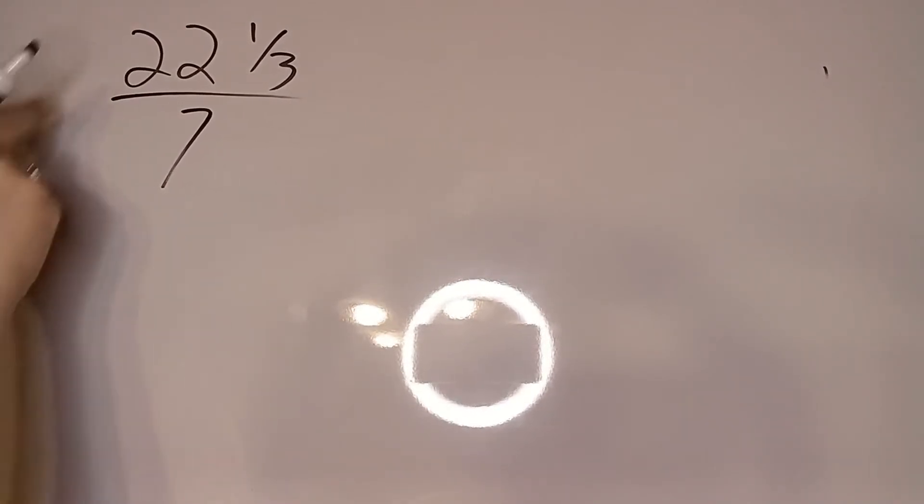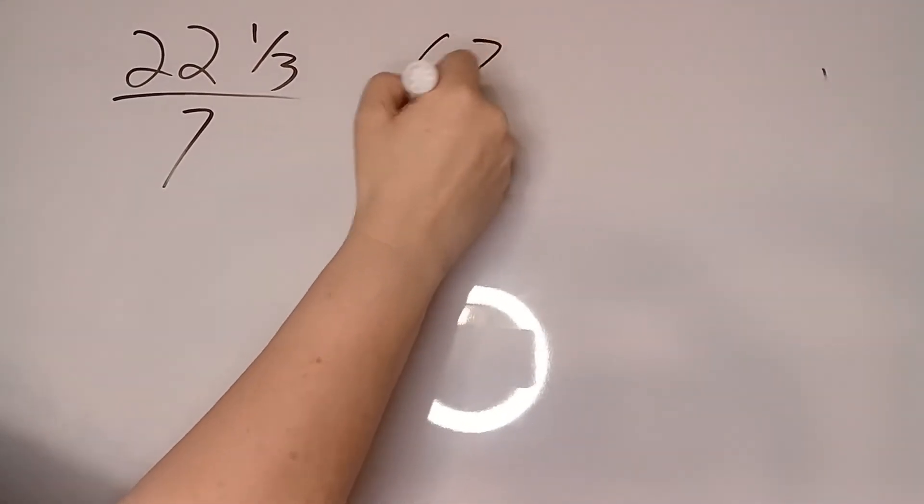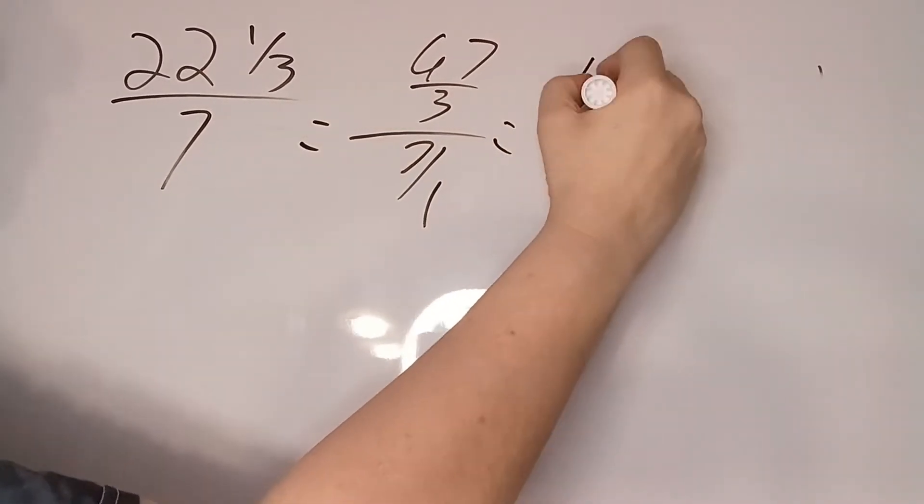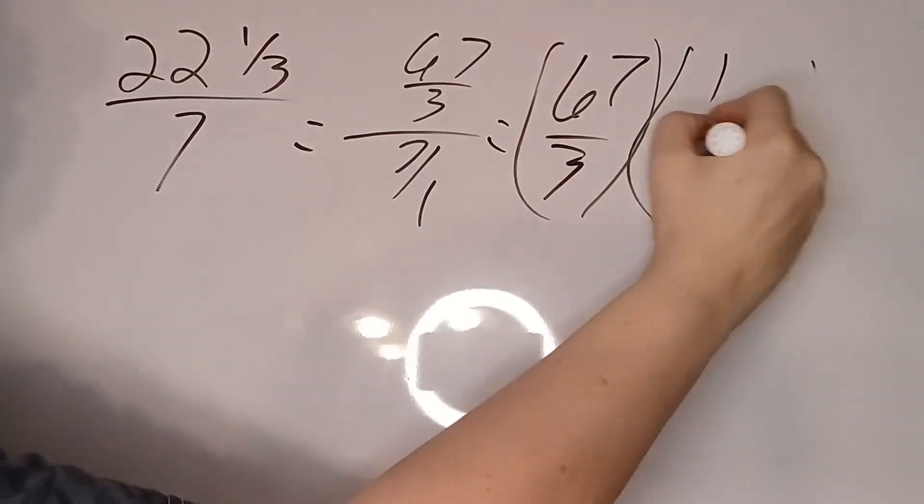All right, we're told to change this mixed number into an improper fraction. That's 66, 67 thirds divided by 7 over 1. And then invert and multiply. It's 67 over 3 times 1 over 7.